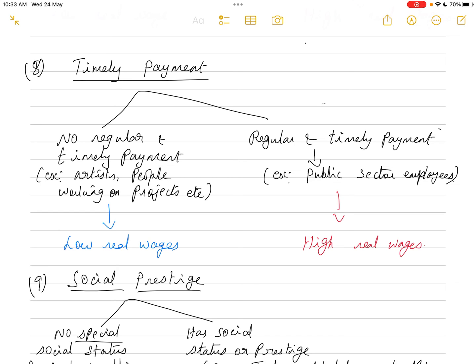The eighth factor is timely payment. In some occupations, laborers are certain they will receive payment on a particular date. In others — like artists or project-based workers — payment comes only after the project is completed, so they are unsure when they will get paid. For those with irregular payment, real wages are low. Public sector employees and most staff who know exactly when they will be paid have high real wages.